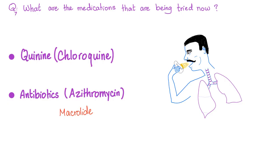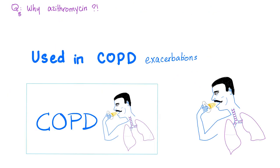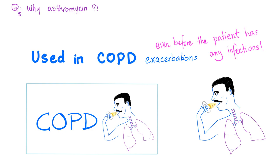What medications are being tried right now for coronavirus? They are working on a lot of things including entry inhibitors, quinolines, and antibiotics. Why chloroquine? Because it's a zinc ionophore. Why antibiotics such as azithromycin? You might object that azithromycin is antibacterial and coronavirus is a virus — so why use an antibacterial for a virus? Because azithromycin is used in COPD exacerbations not necessarily tied to infection. Even before a COPD patient develops any bacterial or viral infection, you can give azithromycin, because this drug appears to have anti-inflammatory effects. That's why it's being tried for coronavirus — will it work? We will wait and see.